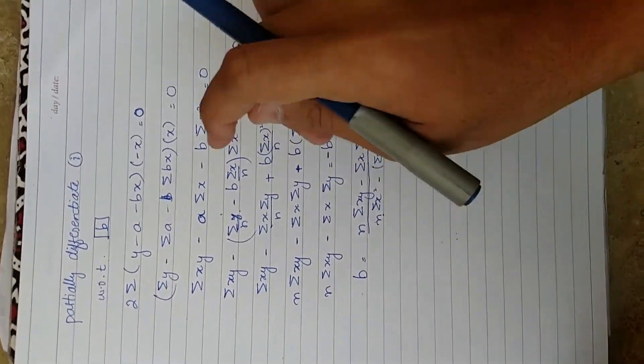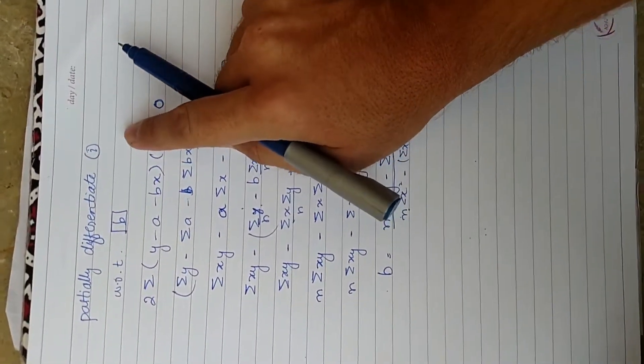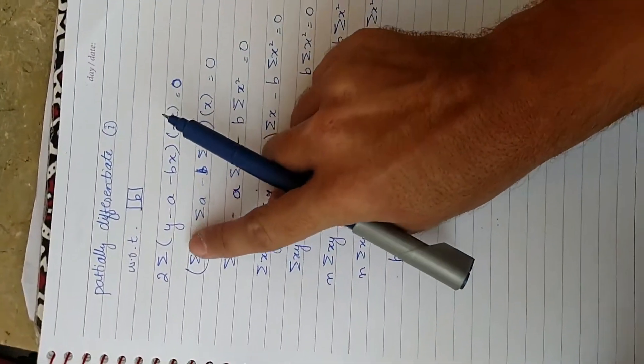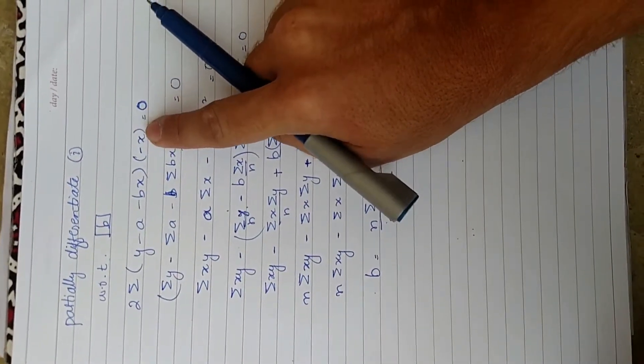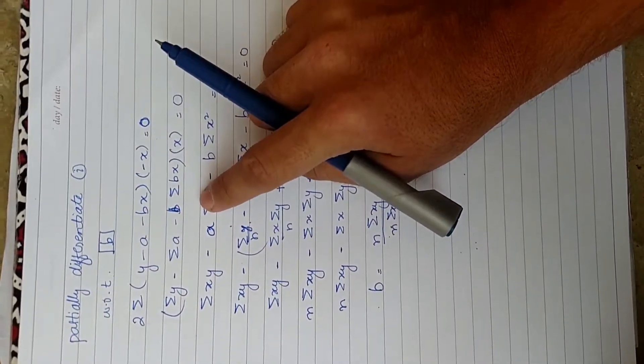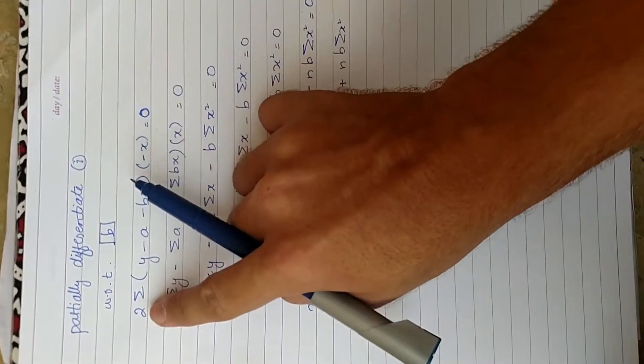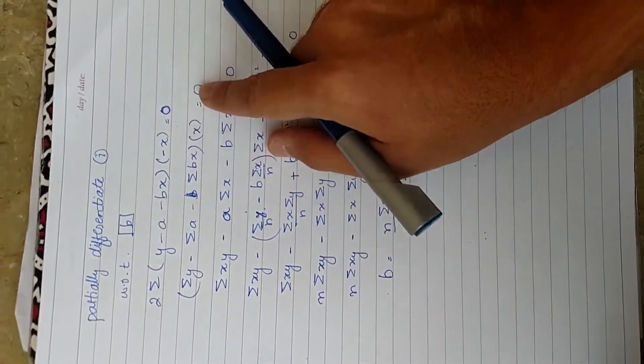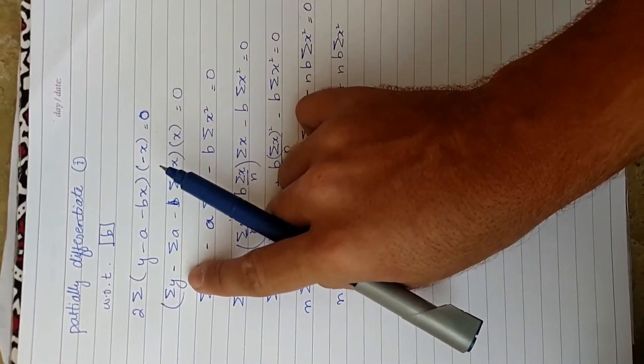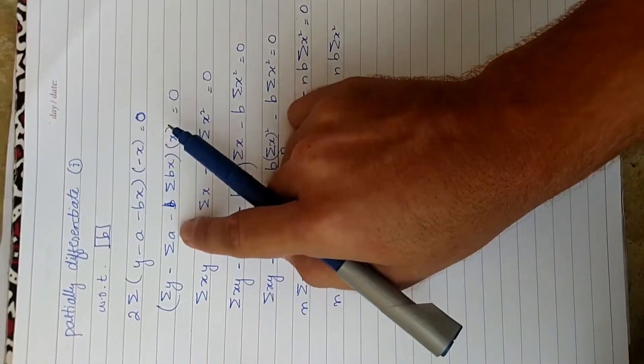We are going to again partially differentiate equation number one, but now with respect to b. With respect to b, we have got this minus x. We again divide 2 and minus 1 with 0, so we lose them. Summation of y, summation of a, minus summation of b into x. Now we substitute the value of a here.